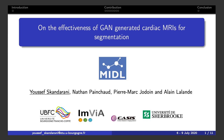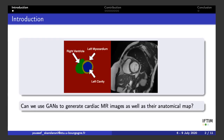Our work touches on the problem of data scarcity in the medical imaging field, especially for cardiac short axis cine MRI, which requires the segmentation of the heart structure in order to infer clinical parameters essential for a cardiac disease diagnosis. To this end, we explore an approach based on the generative adversarial network to try and circumvent the lack of data.